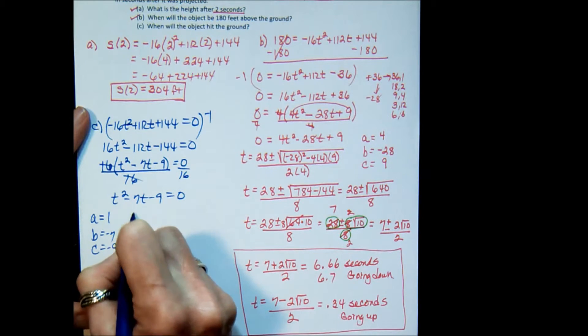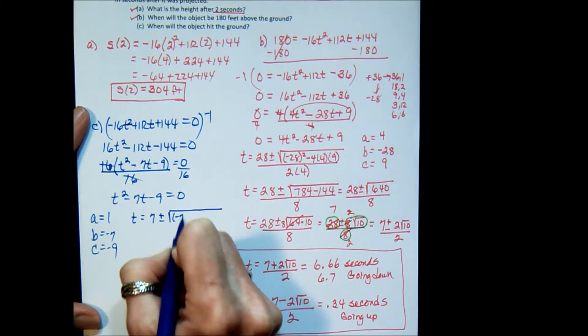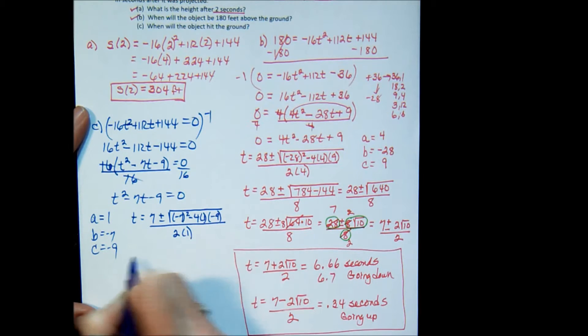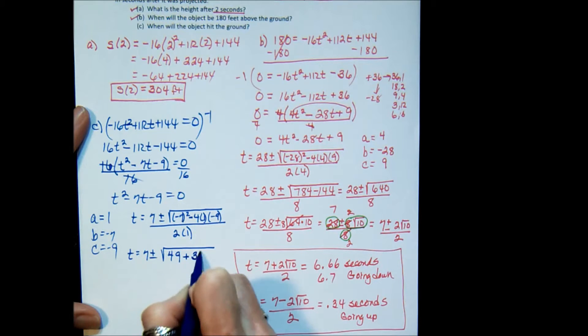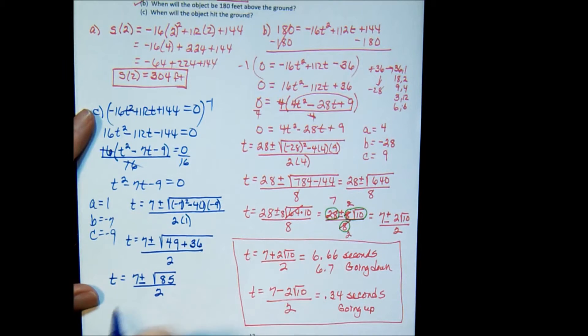So I have t is equal to the opposite of b plus or minus b squared minus 4ac all over 2a. Or t equals 7 plus or minus square root of 49. This is going to be negative times negative is plus 36 all over 2. T equals 7 plus or minus square root of 85 all over 2. Now, here we're going to split it like we did on the last one. So t equals 7 plus radical 85 over 2. We'll get an answer. And t equals 7 minus radical 85 over 2. And we'll get an answer.